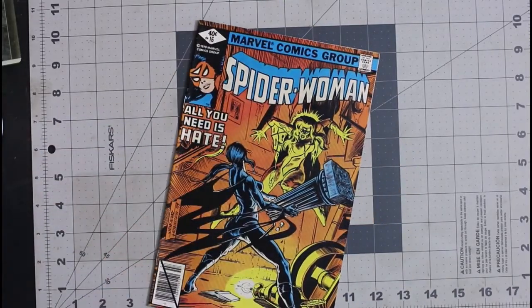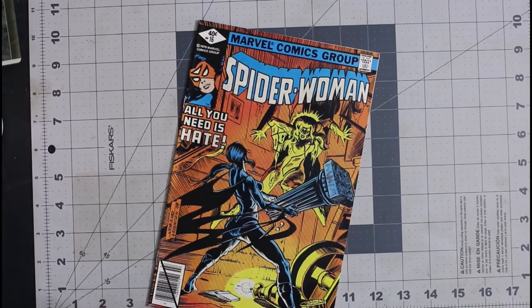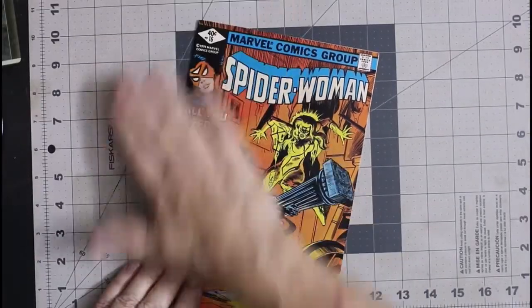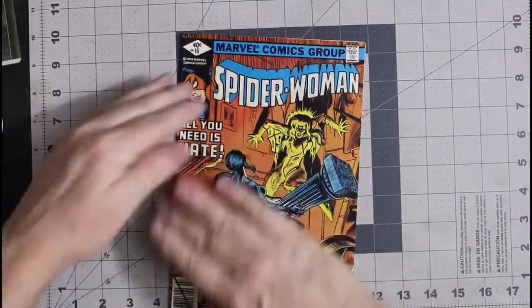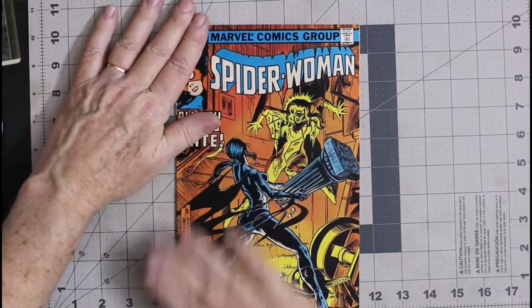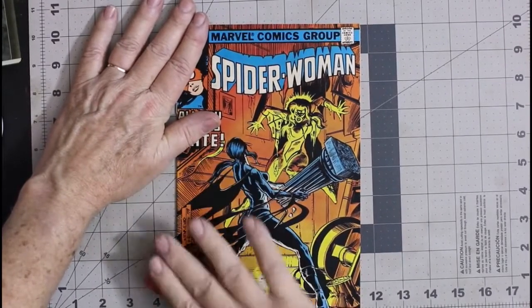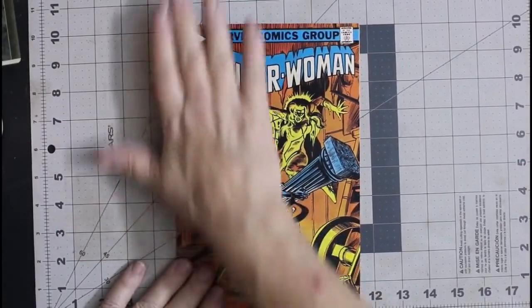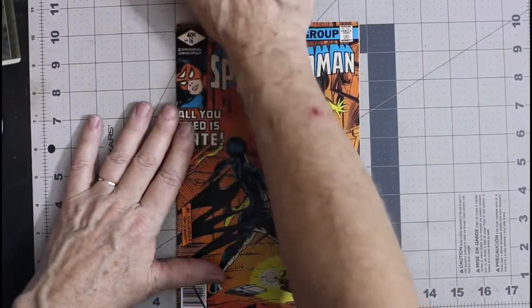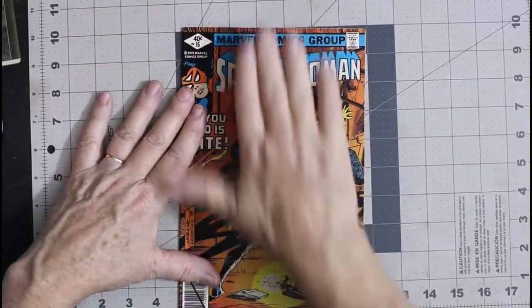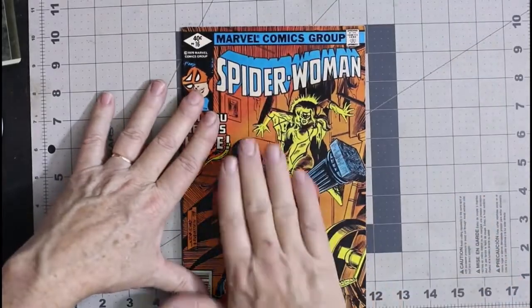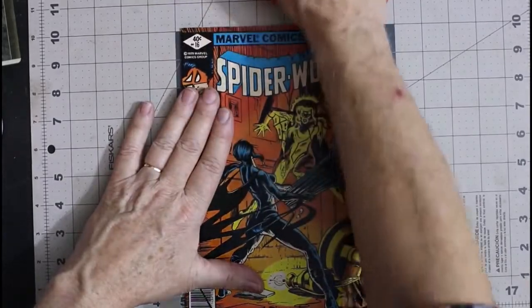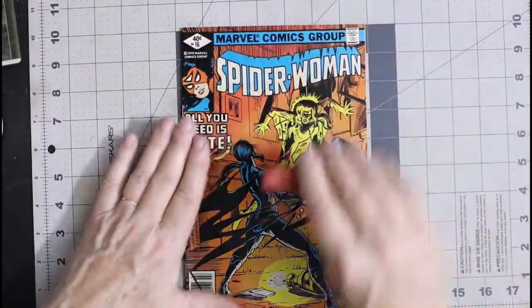Got a little bit of dirt on the front so we're going to start with that. Notice I'm taking and doing a rolling motion with it because I can get more pressure rolling it. Of course when you get to the edge you just kind of roll it right off the edge. And this takes a little bit more of the dirt off.